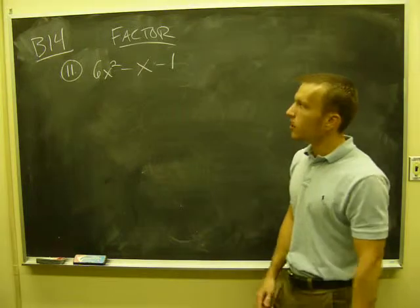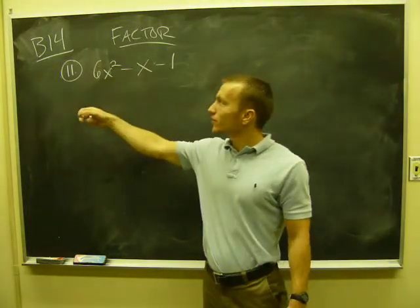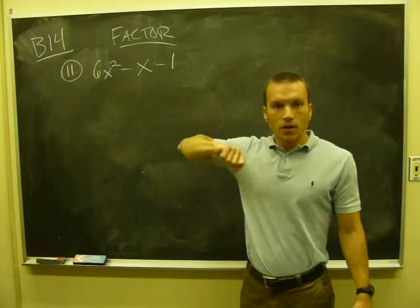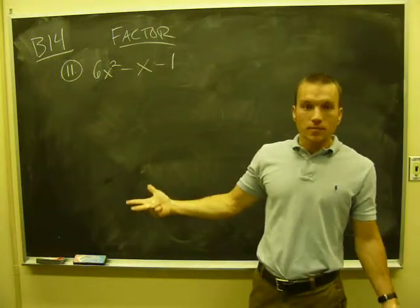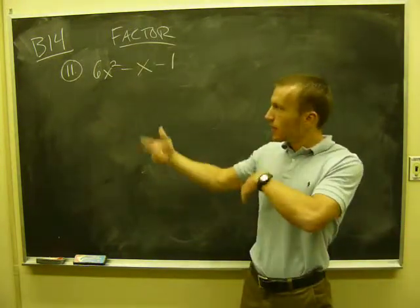What do we look for next? Difference of squares. This one, we can't really factor the difference of squares because there's an x term. Typically it's an x squared term and a number term with a minus in between. The difference of two squares is not going to work here.